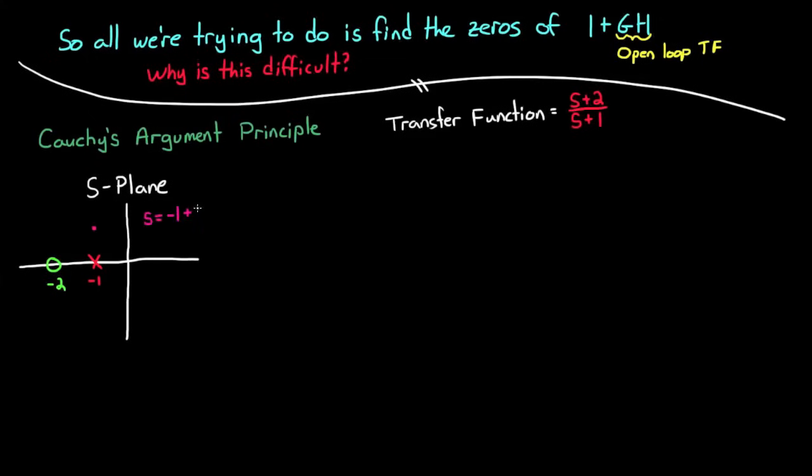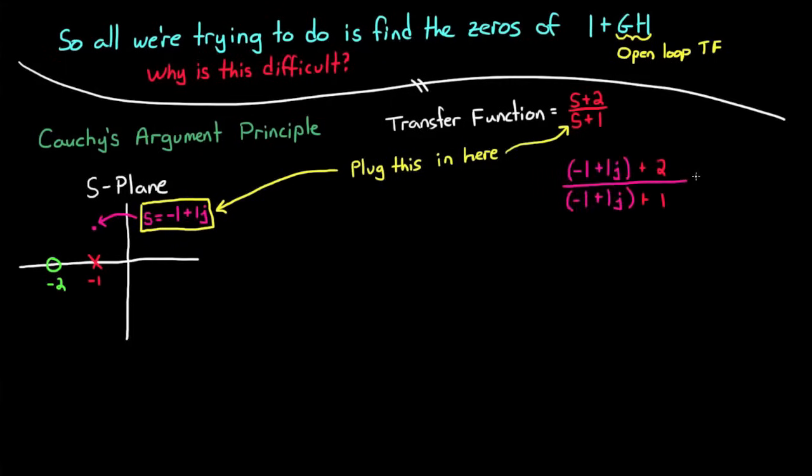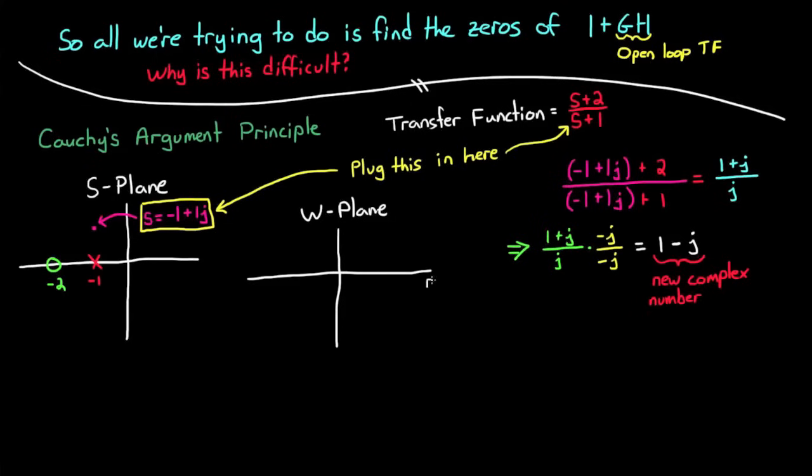Now if we take just a single point in the s-plane, let's say s equals minus 1 plus j, and plug it into our transfer function, which is s plus 2 over s plus 1, you'll get a new complex number out, 1 minus j. And let me plot this new complex number on a new plane, but I'm just going to give an arbitrary letter w, the w-plane.